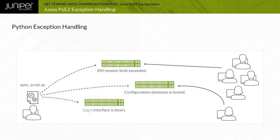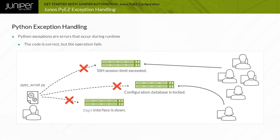The Python scripts you create may be correct, but still fail to execute properly. Errors that are encountered when Python scripts run are called exceptions. A Python script can be syntactically correct, but fail because of external factors such as target devices that are unreachable, session limits that are exceeded, or configuration databases that cannot be locked. You can include Python code in your scripts that handle these types of exceptions.